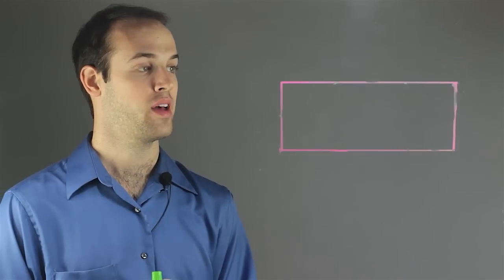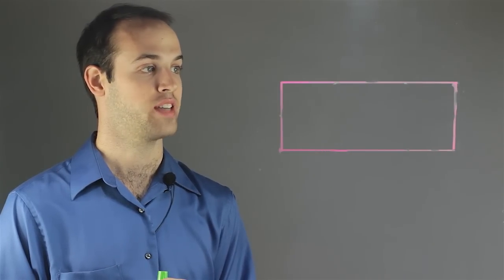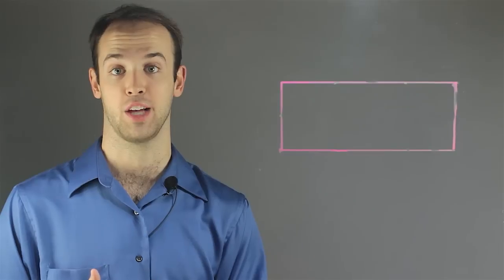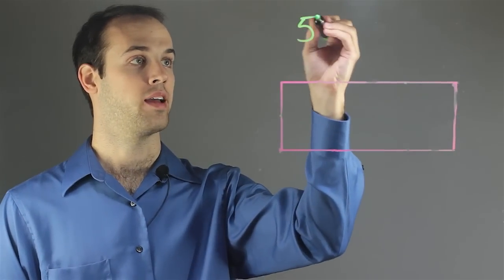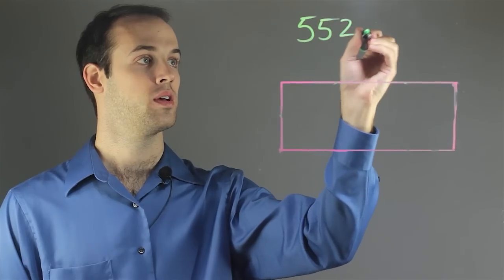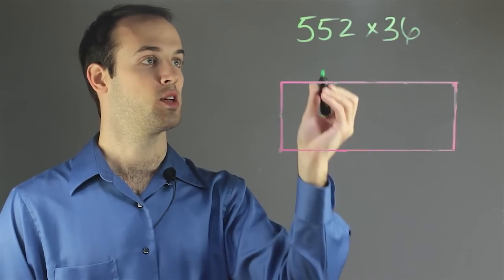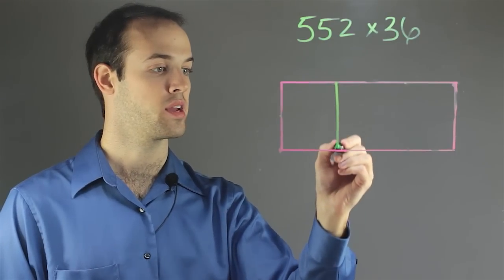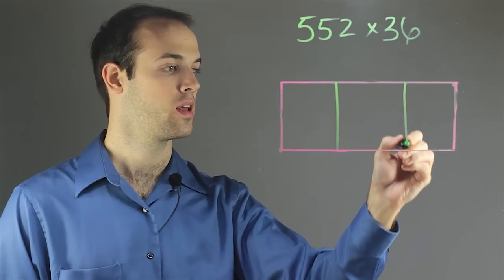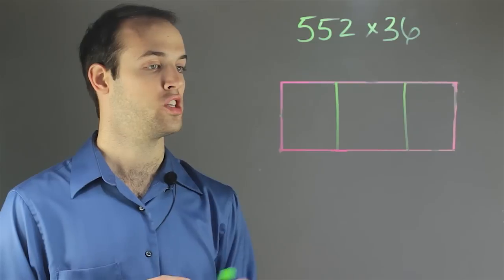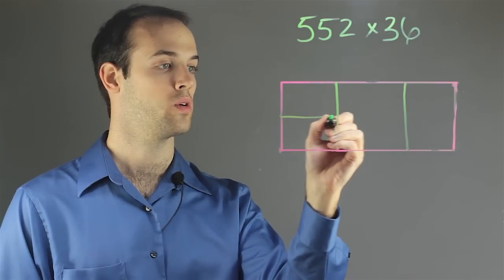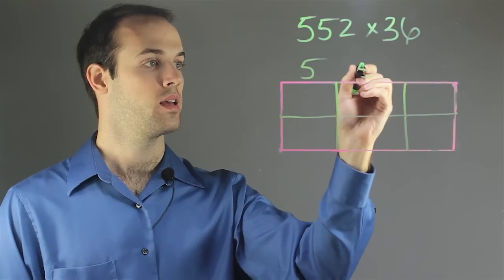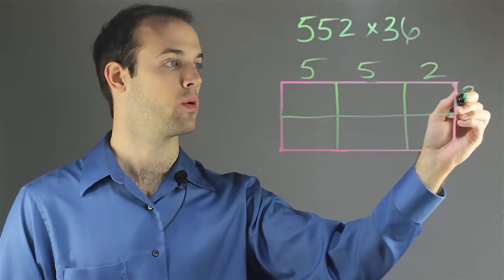So what we want to do is start out with a table, and we want to divide our table into the appropriate amount of columns and rows that correspond with our multiplication problem. Let's suppose that we want to multiply 552 by 36. Since we have 3 digits in the first number, I'm going to divide our lattice into 3 columns. And since our second number is only 2 digits, I'm going to divide it into 2 rows. And then I'm simply going to write each digit out as a header for each row and column.